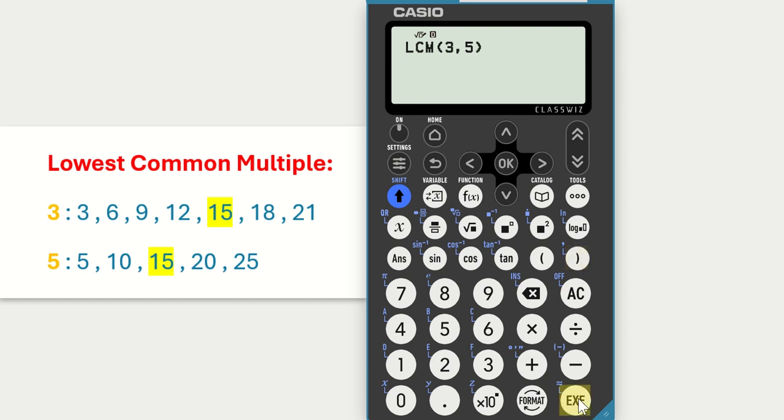You then click equals. So it's appearing now that the lowest common multiple of 3 and 5 is 15. So that's how to identify lowest common multiples using the Casio calculator.